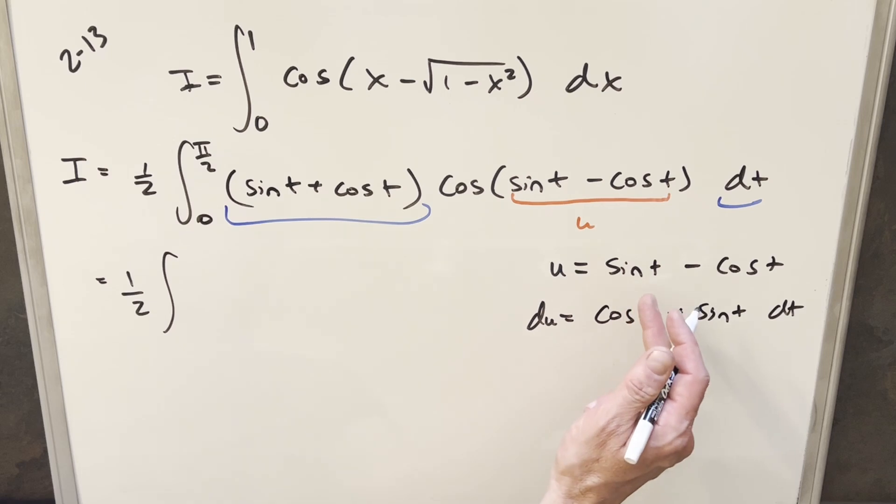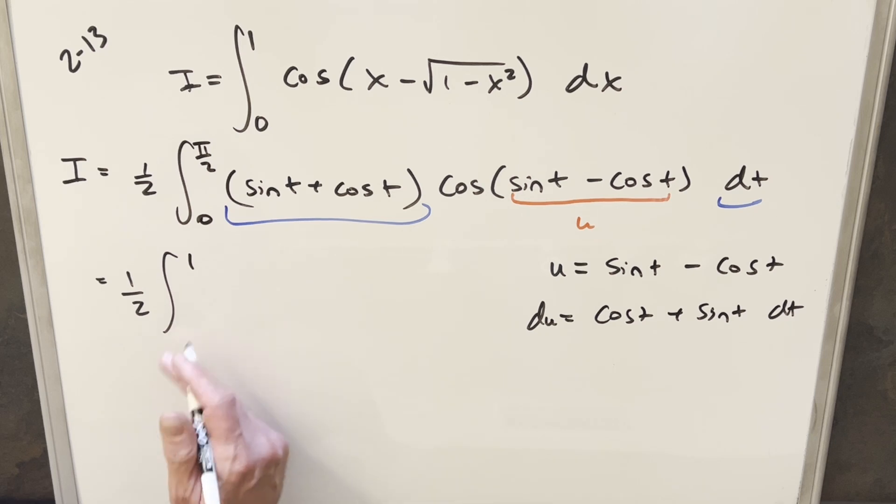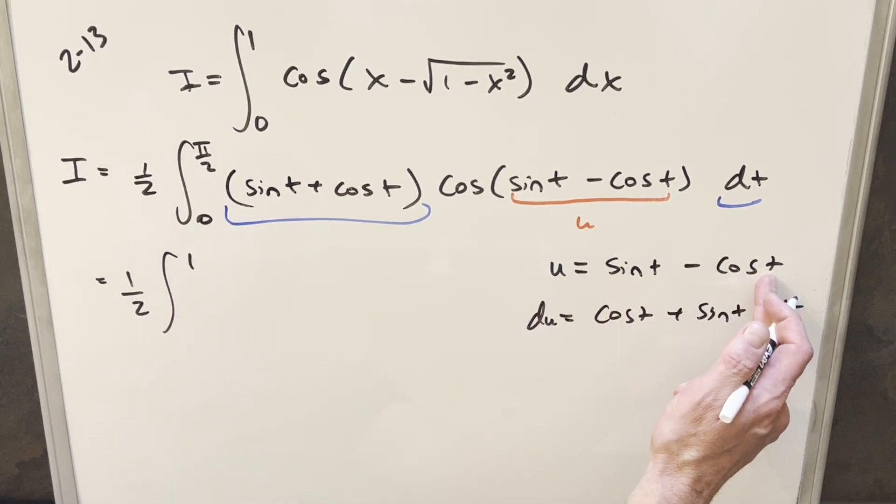evaluating this at pi over 2. Sine at pi over 2 is 1. Cosine pi over 2 is 0, so our upper bound is going to be just 1. And then evaluating at 0, sine at 0 is 0. Cosine at 0 is 1, so our lower bound is going to become minus 1.